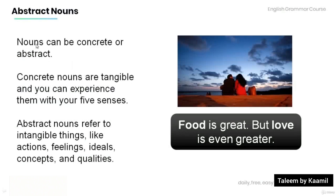Remember that nouns can be concrete or abstract. Concrete nouns are tangible and you can experience them with your five senses, whereas abstract nouns refer to intangible things such as actions, feelings, ideals, concepts, and qualities. For example, 'Food is great, but love is even greater.' Food is a concrete noun as it refers to a tangible thing, and love is an abstract noun because it refers to something intangible — a feeling.